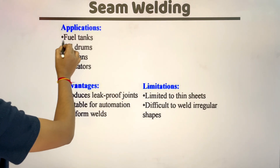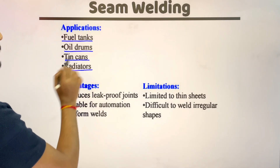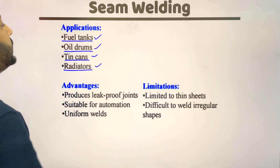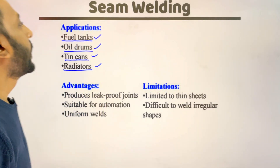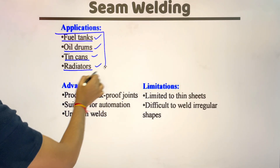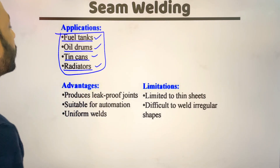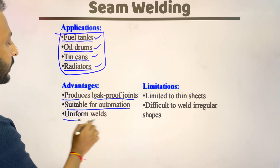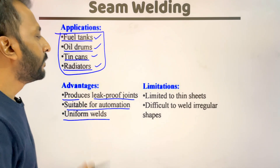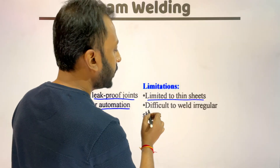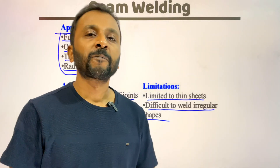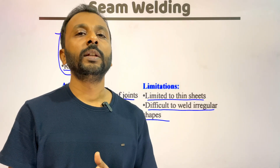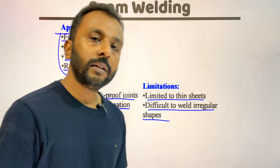Applications of seam welding include fuel tanks, oil drums, steam cans, and radiators — because these applications require leak-proof joints. The advantages are that it produces leak-proof joints, is suitable for automation, and creates uniform welding joints. Limitations include that it is limited to thin sheets and it is difficult to weld irregular shapes. In arc welding or other processes irregular shapes can be welded, but in seam resistance welding that is not possible.